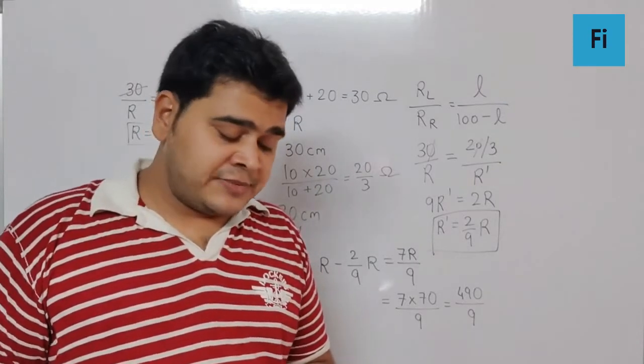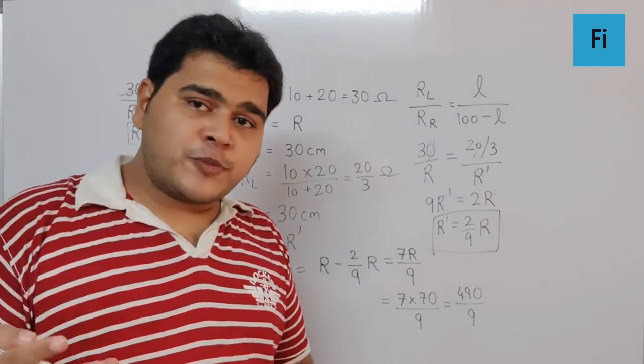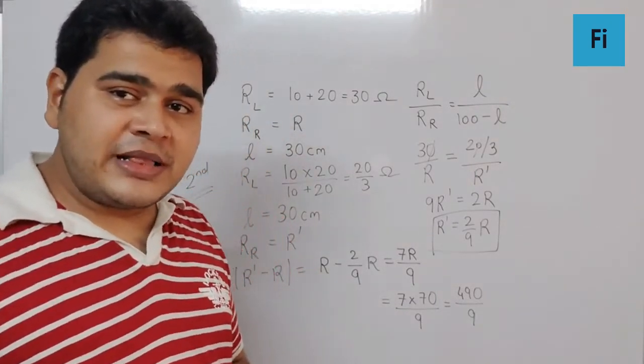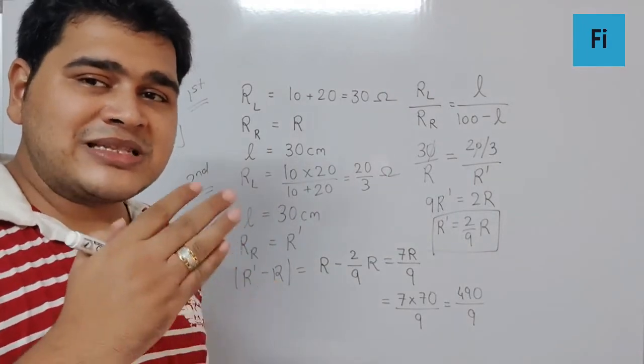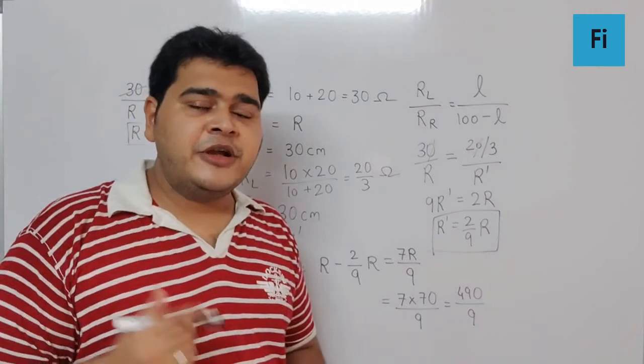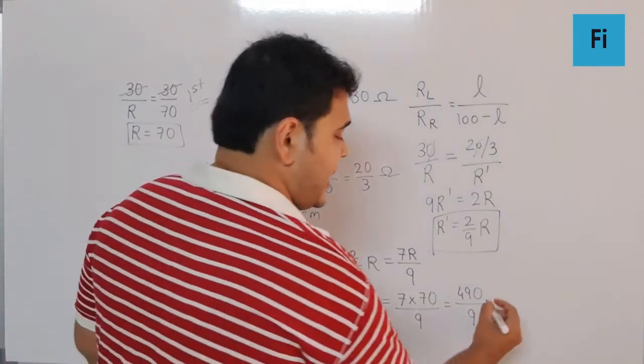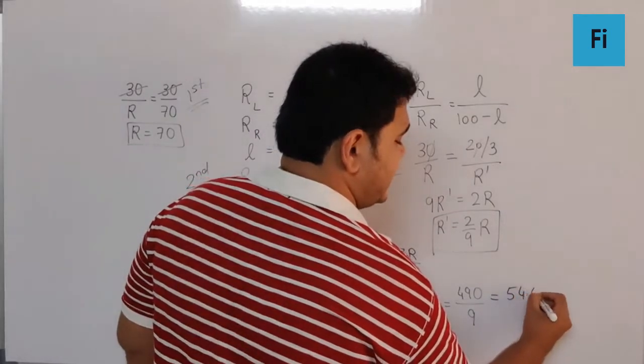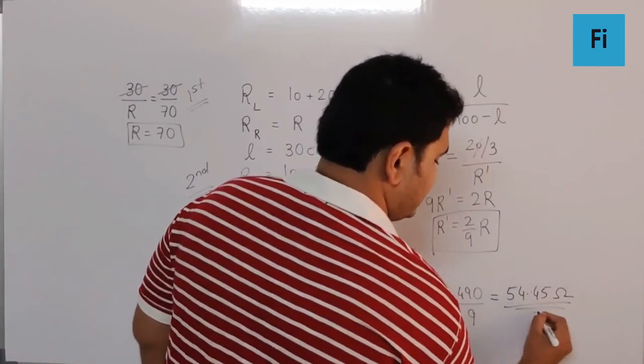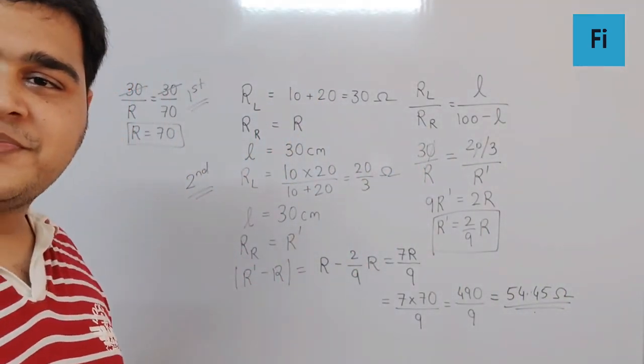The options are 80 ohm, 15.55 ohm, 54.45 ohm, and 64.45 ohm. It should be close to but slightly greater than 49. The closest option to 49 ohm is 54.45 ohm, so that's my answer. I hope this is clear to you.